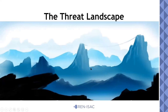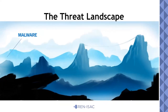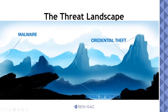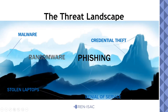The threat landscape: we see threats from malware, theft of credentials, denial of service attacks, stolen laptops, and the two big ones right now are ransomware and phishing. A lot of times these are combined. Phishing is almost always the way in for any other attack — that's how malware gets planted on computers, how ransomware is generally spread, and how credentials are stolen.